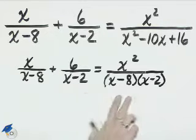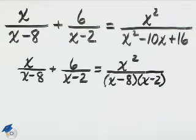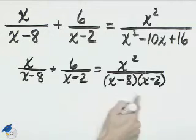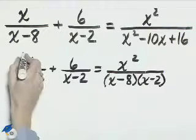Now, the least common denominator is the product x minus 8 times x minus 2, and so we need to multiply both sides of this equation by those factors.